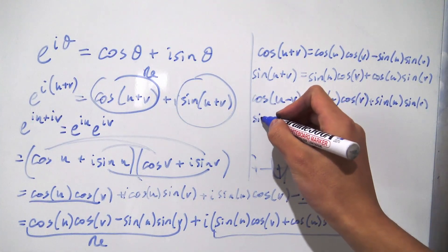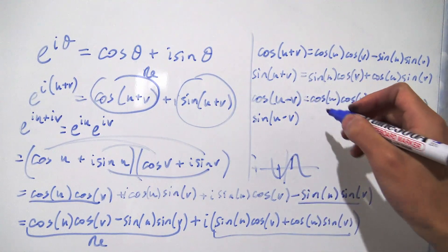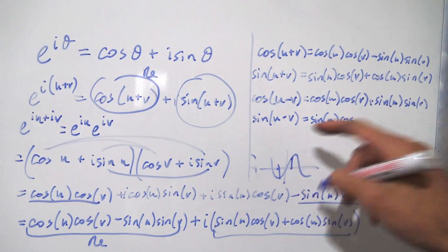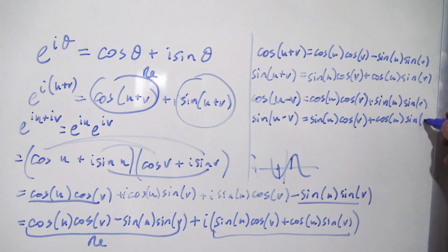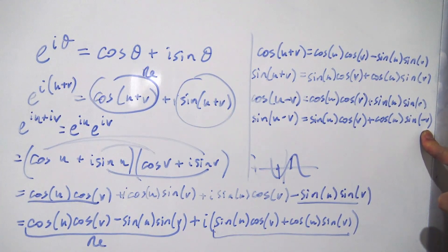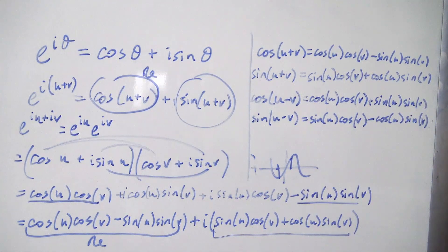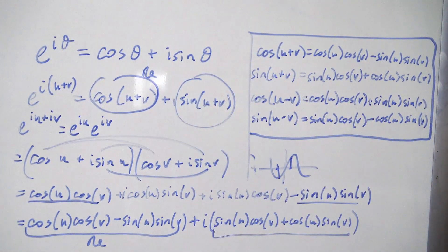We do the same for sine of u minus v, replacing positive v with negative v. We get sine of u times cosine of negative v plus cosine of u times sine of negative v. Cosine is even so cosine of negative v stays as cosine of v. Sine is odd so sine of negative v becomes negative sine of v, giving a minus sign. So sine of u minus v equals sine of u cosine of v minus cosine of u sine of v. Those are all the cosine and sine angular sum and difference identities, derived using Euler's formula.